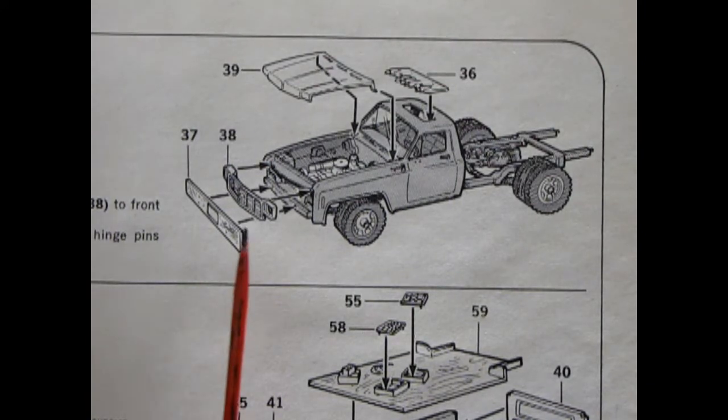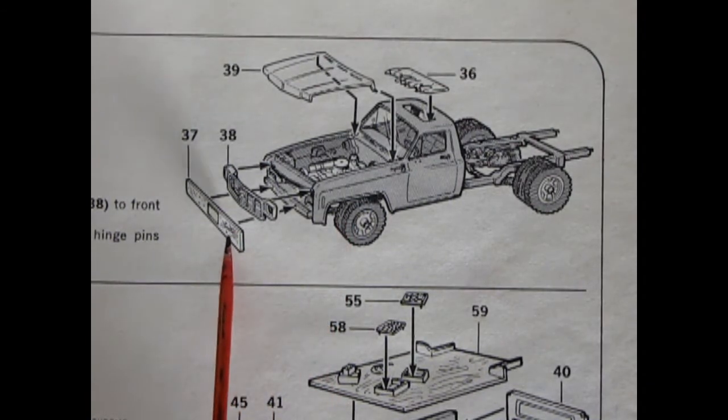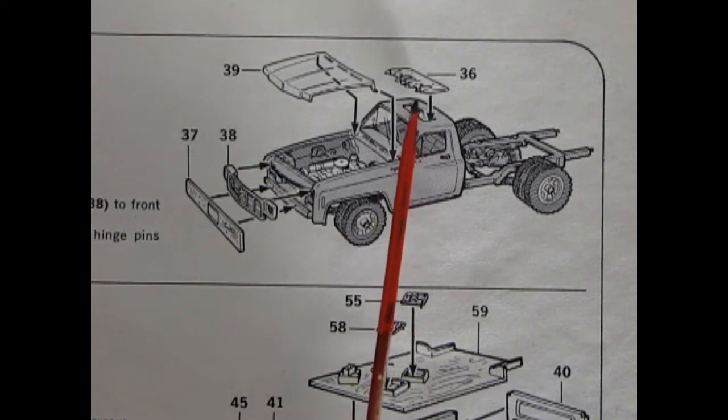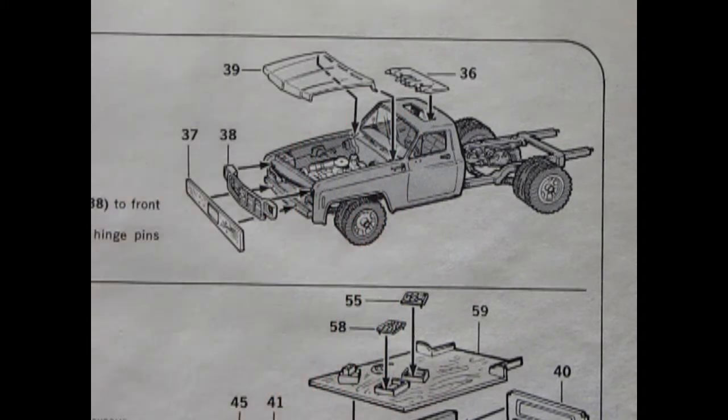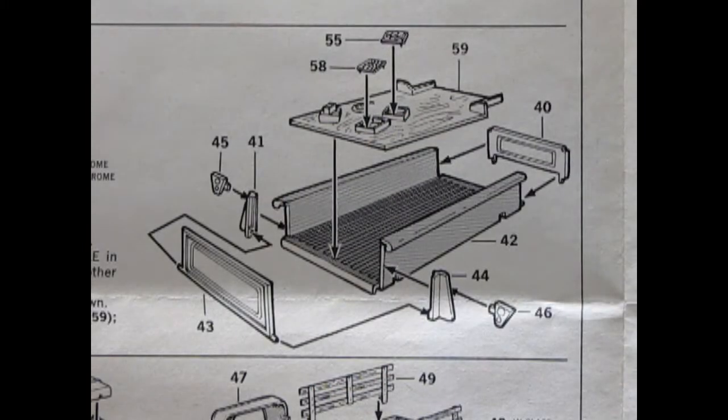Panel 13 is showing our Chevy grille going in place as well as the wooden front bumper, and then on the roof we have all these nice lights and there's our hood going into place. Now panel 14 shows the box of our truck going together here.